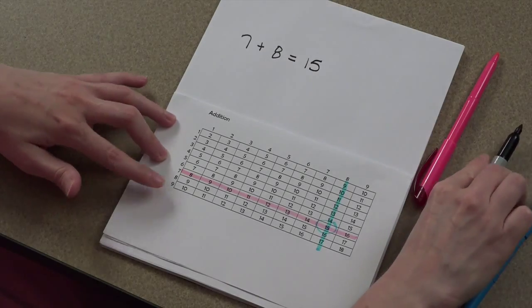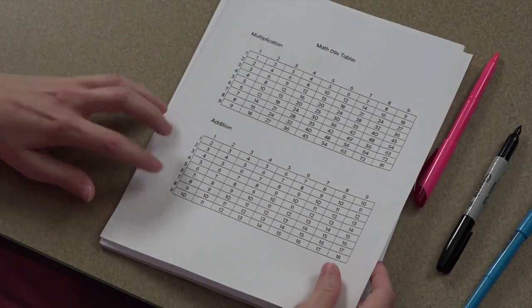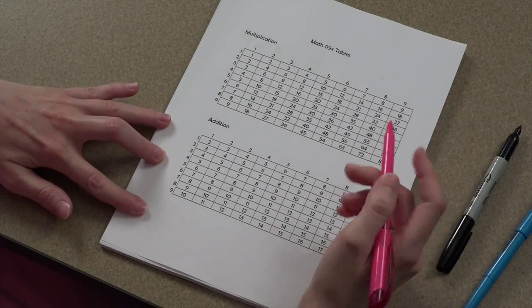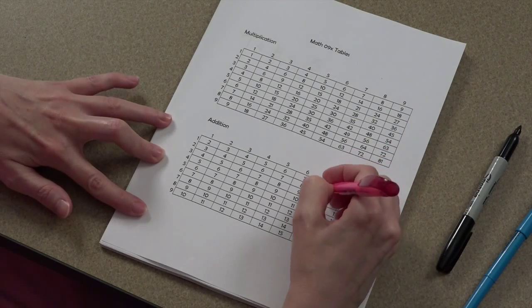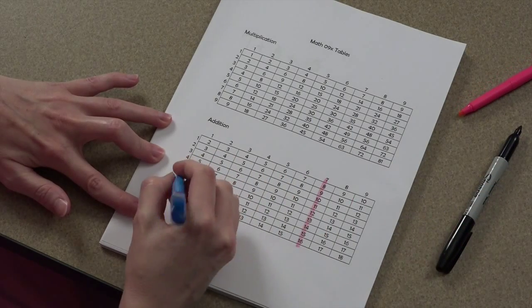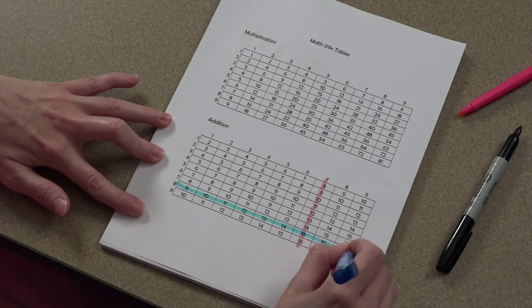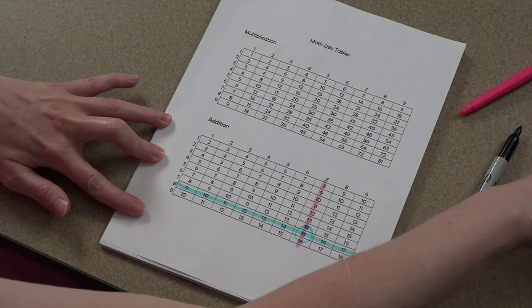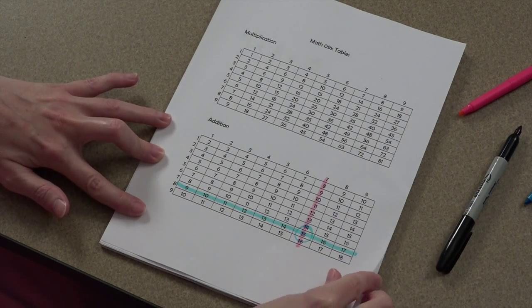You can do this backwards if you prefer. Maybe you like to start with a column. Well, you can start with a column of 7, and then come over with a row of 8, and you still get the same answer. The commutative property of addition rocks that way.